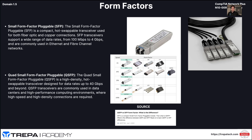Then we have Quad Small Form Factor Pluggables, or QSFPs. These are high-density, hot-swappable transceivers designed for data rates up to 40 gigabits per second, commonly associated with Twinax cables, and used in data centers and high-performance computing environments.